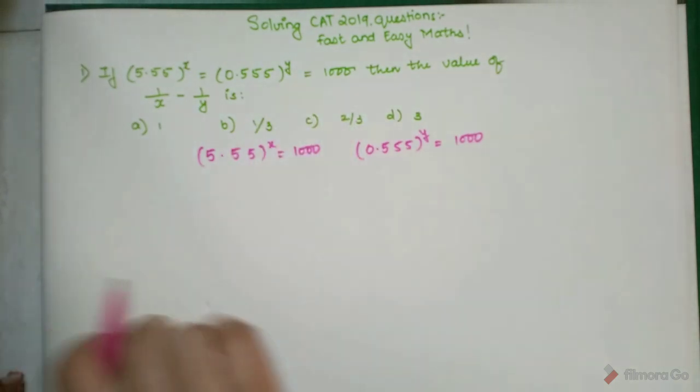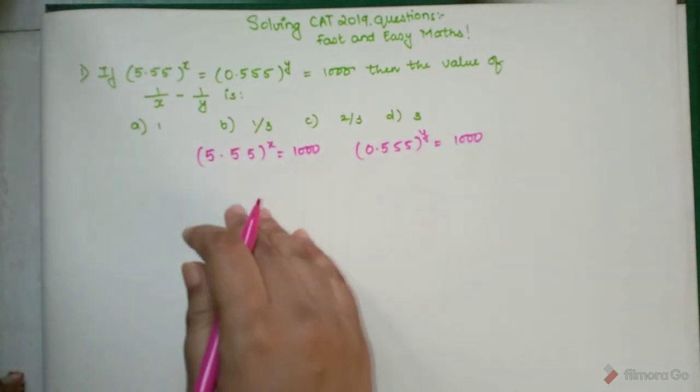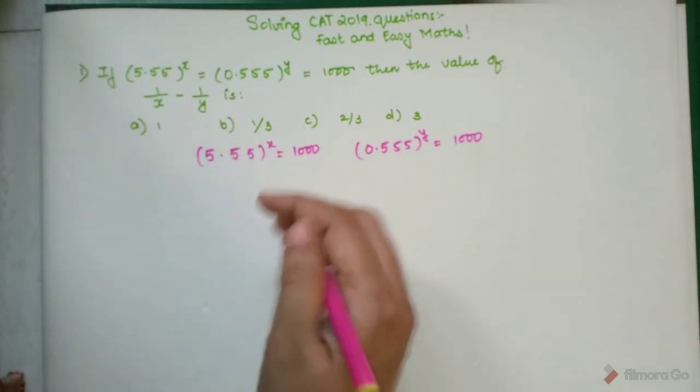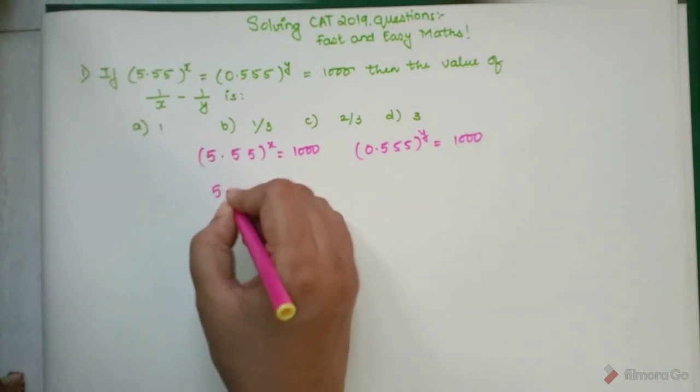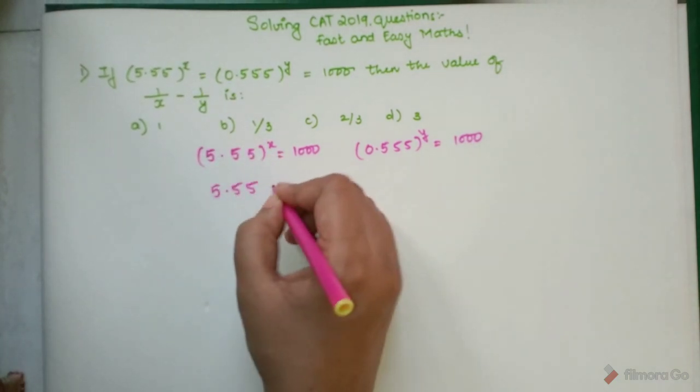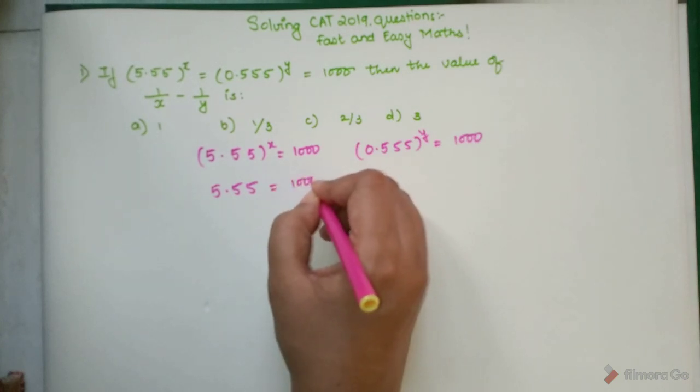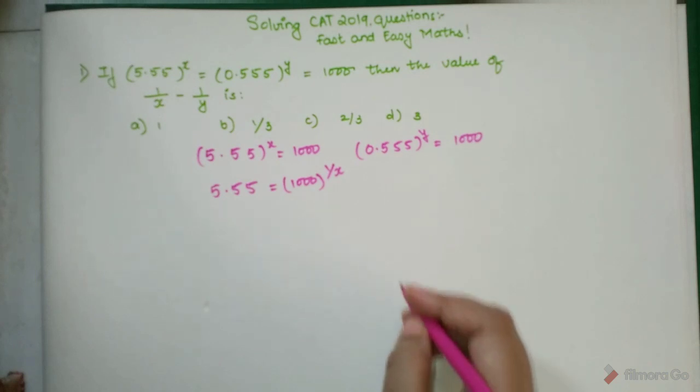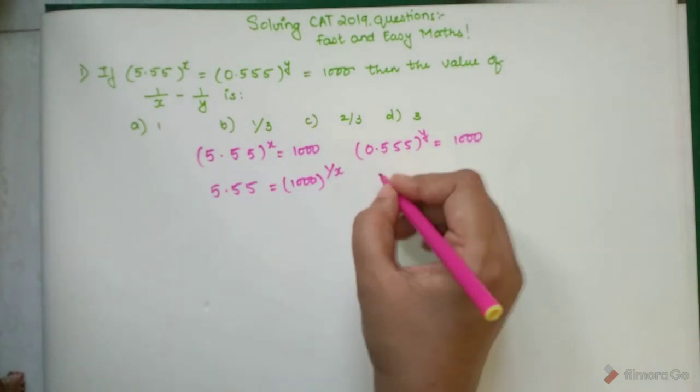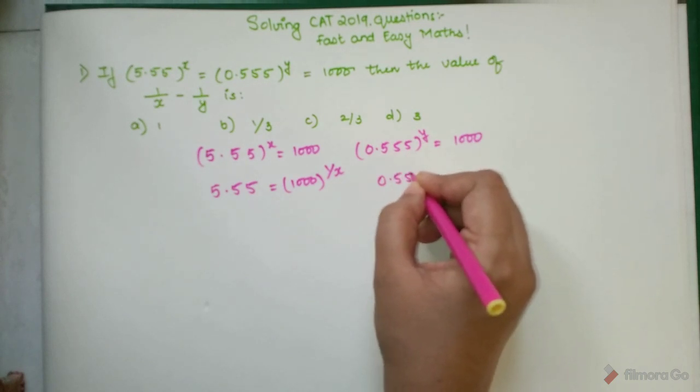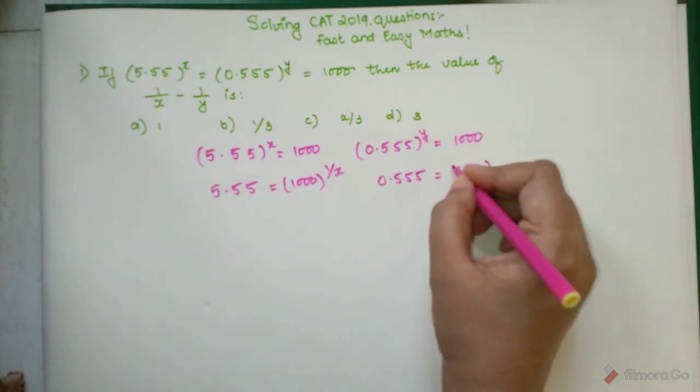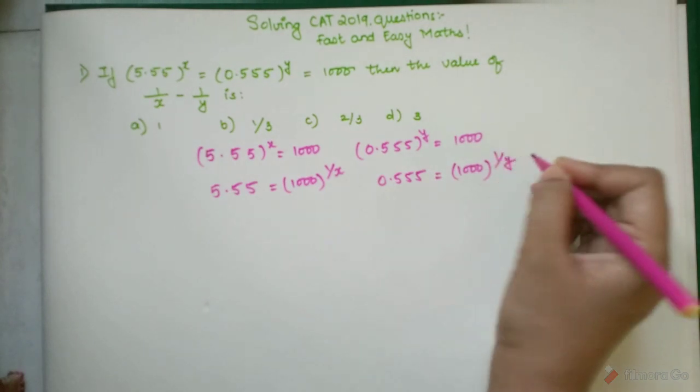The thing is we'll take the xth root on both the sides of this equation. So I will get 5.55 = 1000^(1/x) and here we can say that 0.555 = 1000^(1/y).